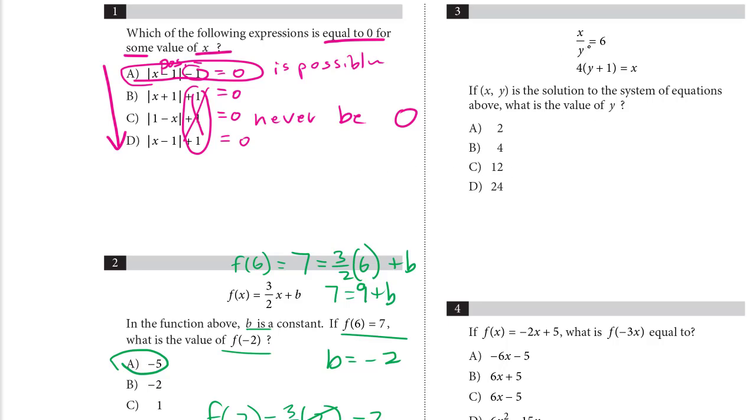Number 3: x over y equals 6, for quantity y plus 1 equals x. If x, y is the solution to the system, what is the value of y? So we want to know what y is here.